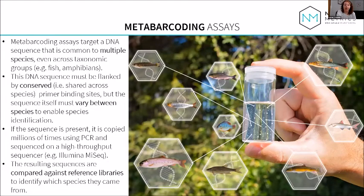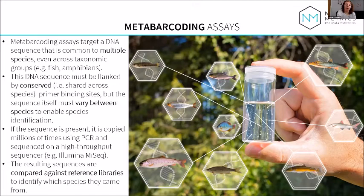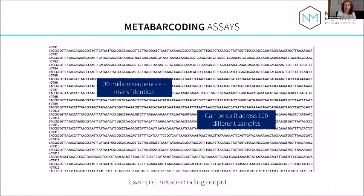Metabarcoding assays target a DNA sequence common to multiple species — even across taxonomic groups such as fish and amphibians. The sequence must be flanked by conserved primer binding sites but vary between species to enable discrimination. If present it's copied millions of times and sequenced on a high-throughput sequencer like an Illumina iSeq. The resulting sequences are compared against reference libraries to identify species. Outputs can contain up to 30 million sequences, yet hundreds of species can be identified from each sample in a single analysis with many samples processed in parallel.